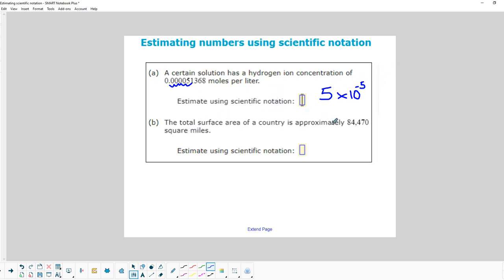The total surface area of a country is approximately 84,470 square miles. Let's move the decimal over from the end 1, 2, 3, 4 places. Then we're going to look at that 8 and say that the digit behind it is 4. So that's not enough to make it round up. So we're going to have 8 times 10 to the 4th power, and that's an estimate of how many square miles are in this country.